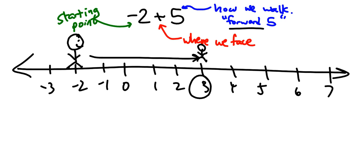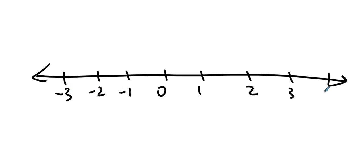If I were to demonstrate once more, I might say, what if we were adding 2 + (-4)? So the 2 is our starting place. We look toward the positive end of the number line. This is where we face.